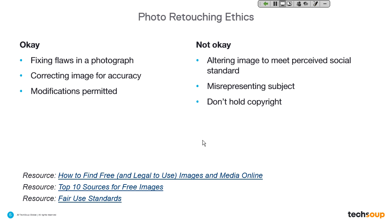It is not okay to alter an image to meet a perceived social standard — the most obvious example being a Cosmo magazine cover making someone look thinner or lighter-skinned. In addition to being inaccurate, it's also offensive. Misrepresenting the subject — making someone appear to be in a place they weren't — can be detrimental to your mission. If someone later discovers you've manipulated an image, your message may lose its impact. Also, don't modify any image if you don't hold the copyright.